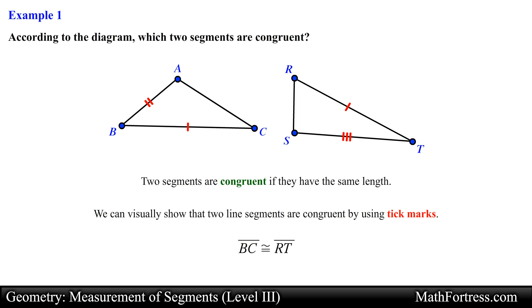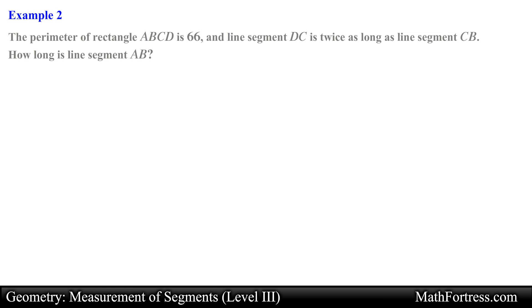Alright, that was a nice warm-up. Let's try a more challenging problem. The perimeter of rectangle ABCD is 66, and line segment DC is twice as long as line segment CB. How long is line segment AB?